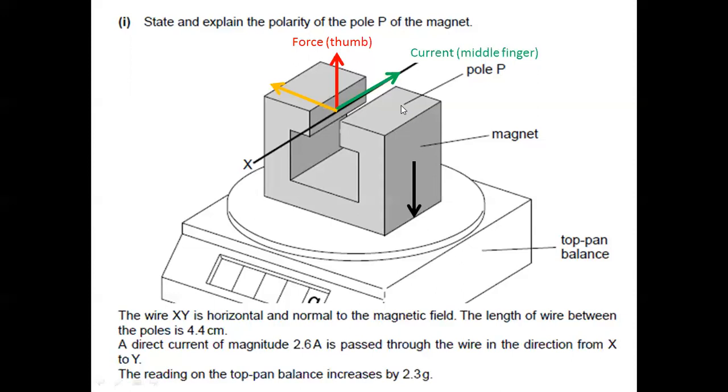And the index finger points to the direction of the field. What does that mean? That means in this scenario, the field seems to originate from this pole and terminate on that pole. But then again, just to clarify,